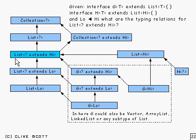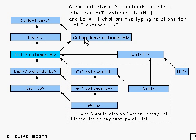What about going the other way — going up? We've got List<? extends High>. What's a bit bigger than High? Well, Object, of course. And a List<? extends Object>, which we can just write like that. Similarly, we can move up from List itself: the next thing up the tree from List is Collection. So we can do Collection<? extends High>. And likewise, we've obviously got Collection<? extends Object>, which we can just do like that.